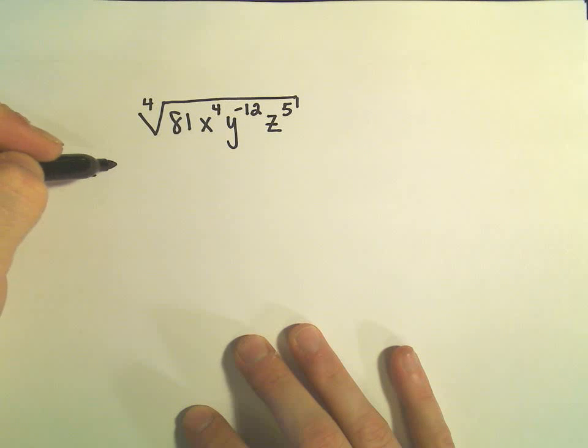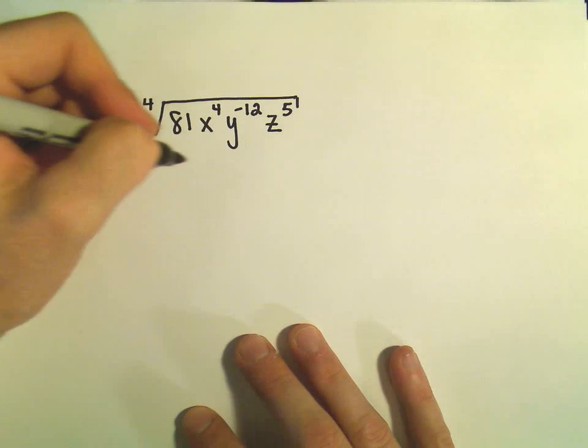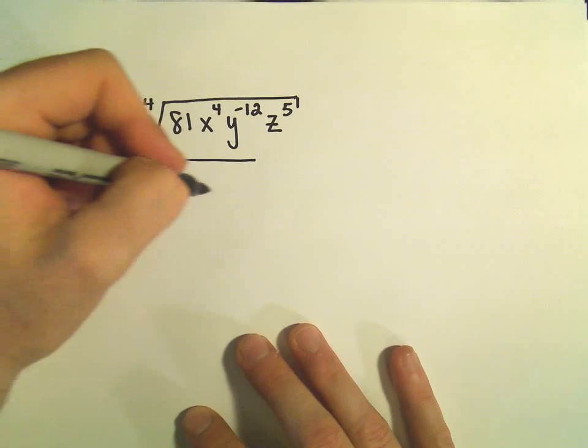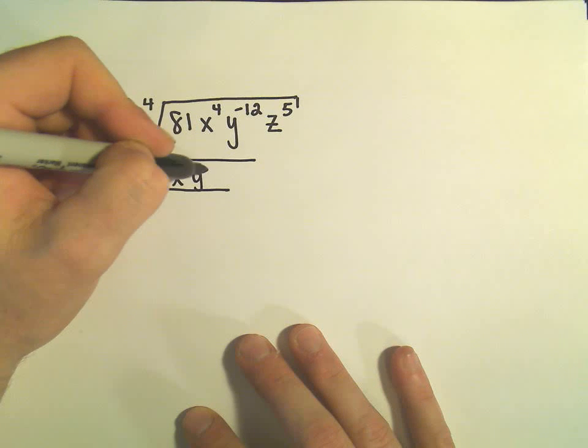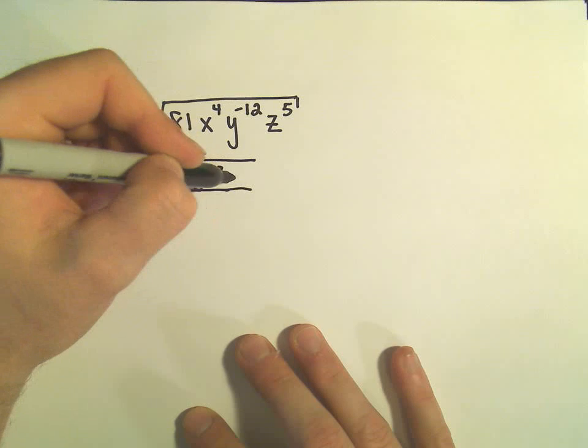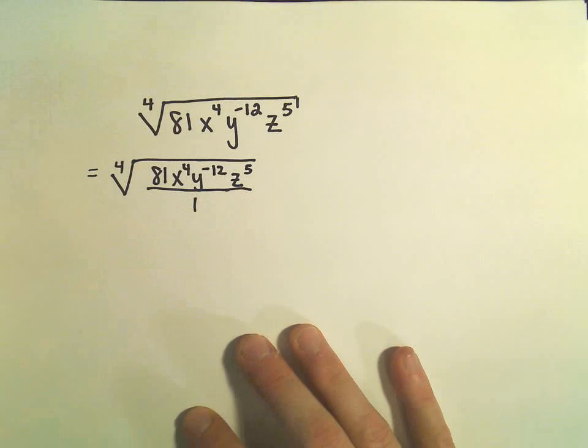There's a couple different orders in which you could do the steps. The first thing that I like to do is make all the exponents positive. So we could write this as 81x to the fourth, y to the negative twelfth, z to the fifth, just over one.